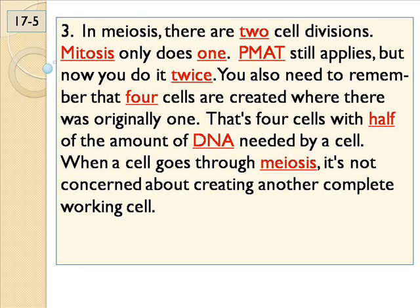Here's the bottom line: meiosis does two divisions. Meiosis reduces diploid to haploid. Meiosis takes one cell and from one cell produces four — that's two divisions. If you had one division, you'd produce two. If you had three divisions, you'd produce eight.